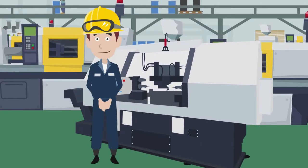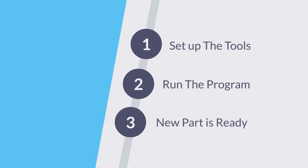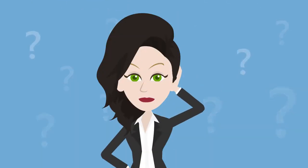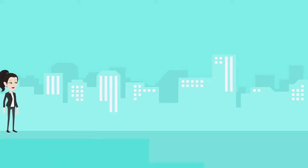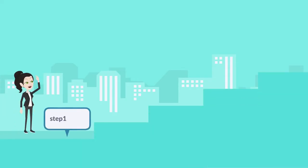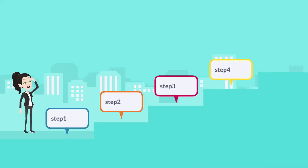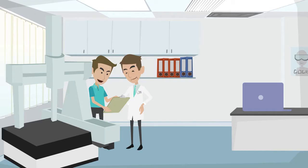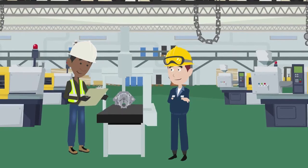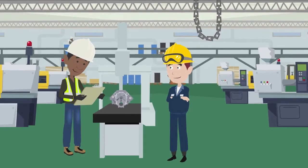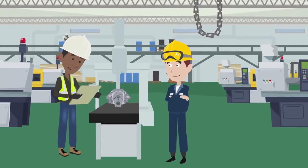Production takes over. Set up the tools, run the program, and the new part is ready. Not quite ready yet — we still need to take one crucial step: the metrology lab. Check the part with our coordinate measuring machine to see if we did it right.